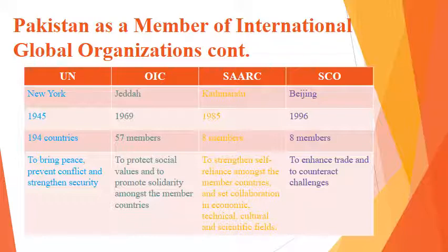The second organization is OIC. Its previous name was Organization of Islamic Conference, later changed to Organization of Islamic Cooperation. The headquarters is in Jeddah, Saudi Arabia. It was established in 1969, when anti-Islamic forces set Masjid al-Aqsa — the mosque in Jerusalem — on fire, which instigated the Muslim Ummah to create a platform to protect Muslims' interests. Currently with 57 members, its purpose is to protect social values and promote solidarity and unity amongst member countries.